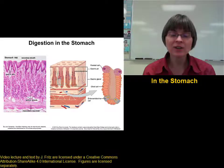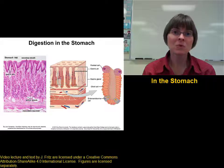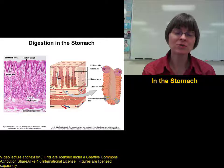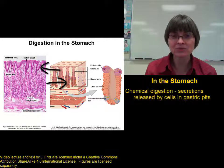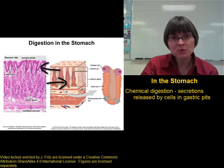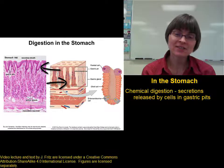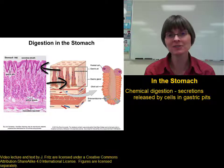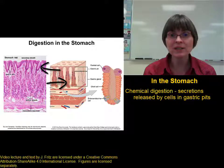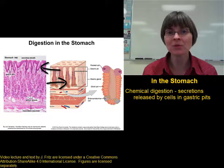Let's move on to digestion and absorption in the stomach. When we looked at the mucosa of the stomach, we noticed the presence of gastric pits — deep grooves where we find cells at the bottom. There are several different types of cells in these gastric pits, and these different types of cells secrete different sorts of enzymes or substances into the stomach.